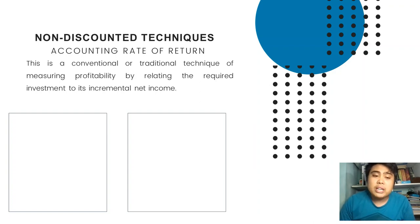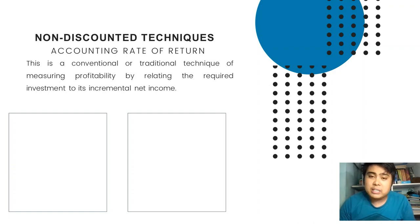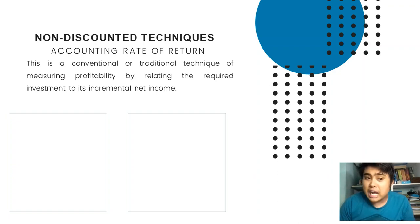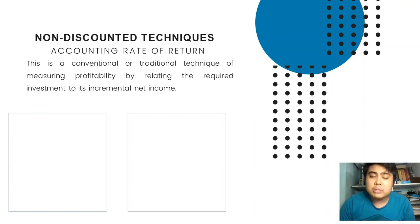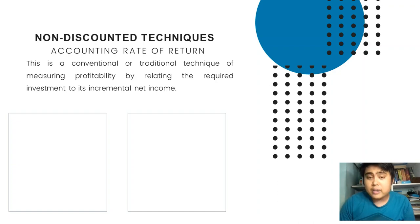You will notice the formula of ARR is very similar to ROA and ROI. That is why another name for accounting rate of return is BRR, which stands for book rate of return. So let us discuss the advantages and disadvantages of using accounting rate of return.